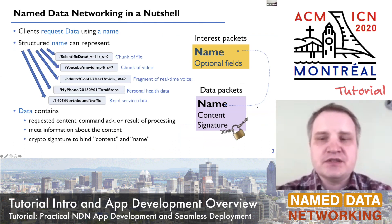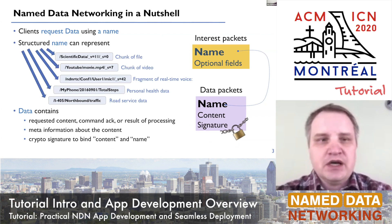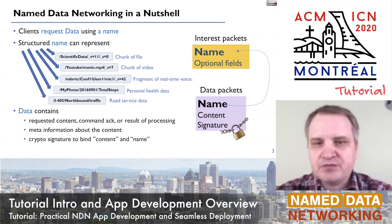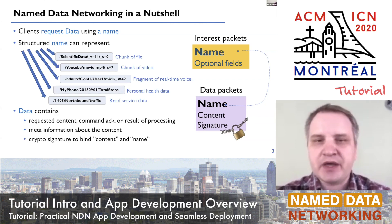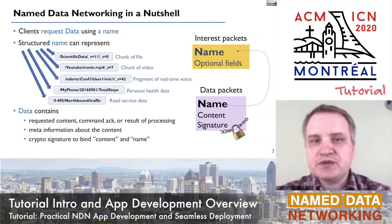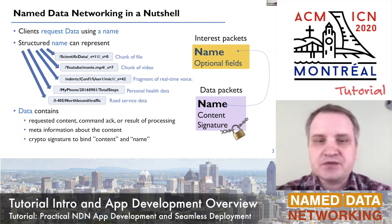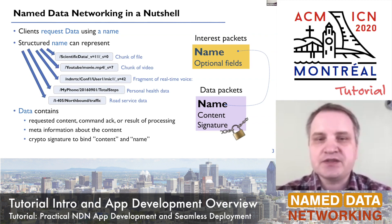First, a very brief introduction to named data networking. NDN in a nutshell is the ability to request a specific piece of data at the networking level using a name. The name can represent many different things. Basically everything can be named and represented as a single data packet, multiple data packets, or a stream. Examples include a file, a chunk of a file, a chunk of a video stream, a command, road service data, personal health data, and so forth.